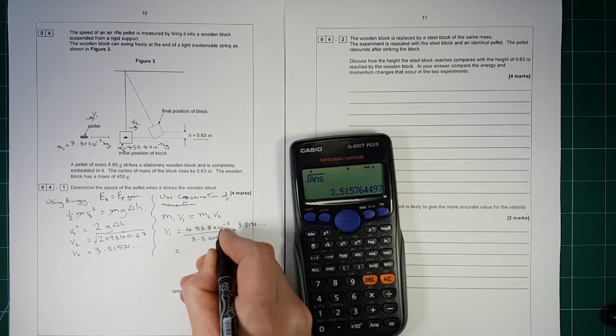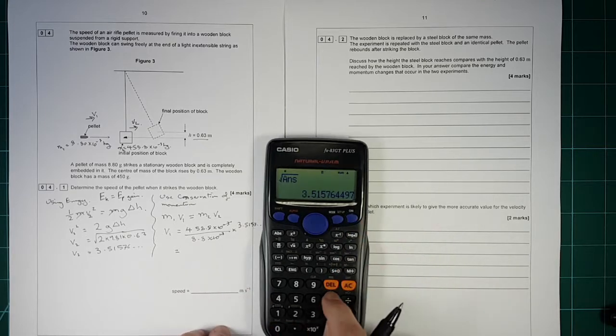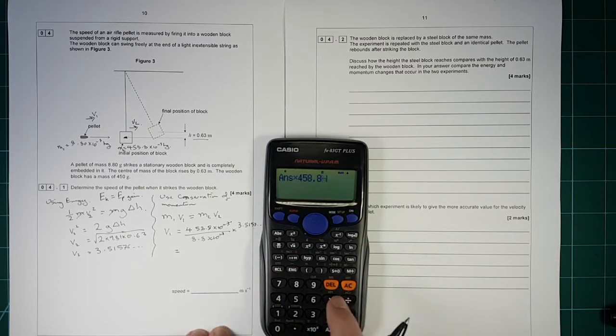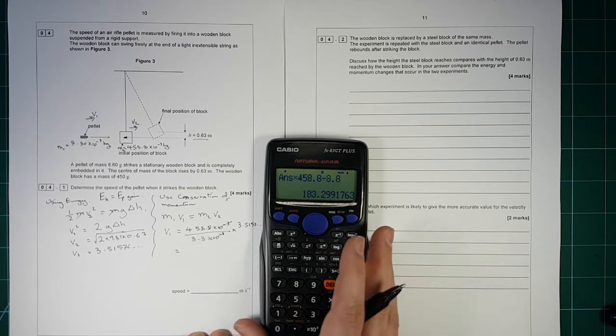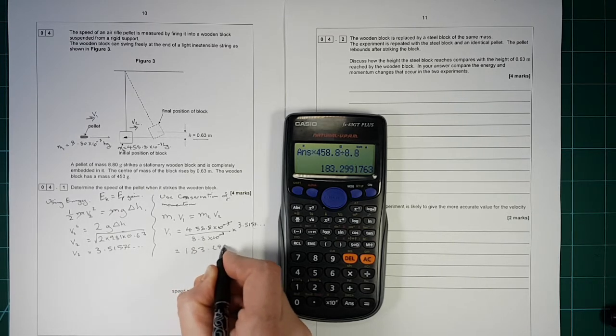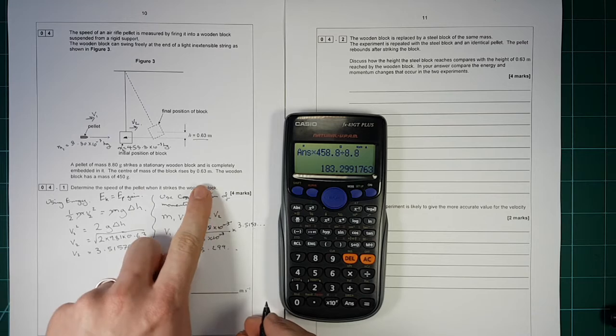So my times 10 to the minus 3 is cancel. And I just do times by 458.8 divided by 8.8. And that gives us 183.299 dot dot dot.